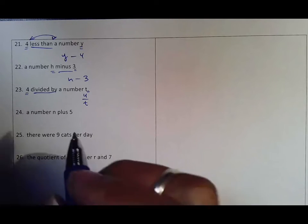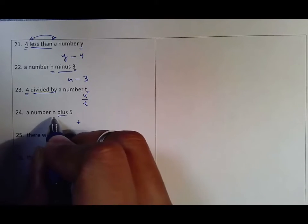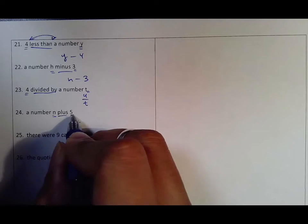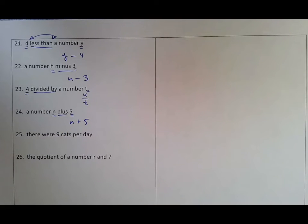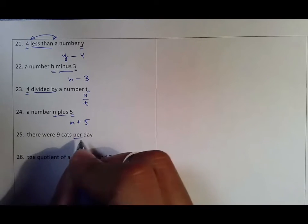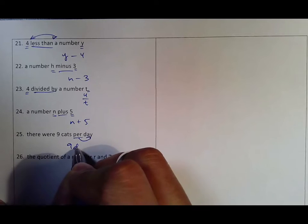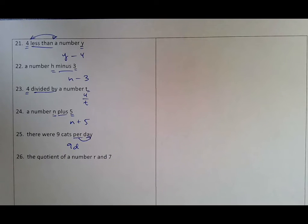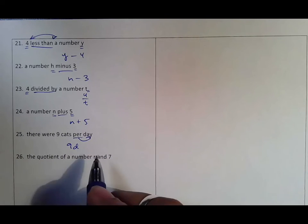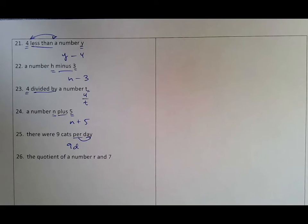A number n plus five: plus means we're adding, that's first, this is second. Another word problem: nine cats per day. Per means multiply, so we're going to do nine times something. The way you figure that out is by saying per what? We're talking about per day, so it's going to be 9d for days, not 9c for cats, because it's per day.